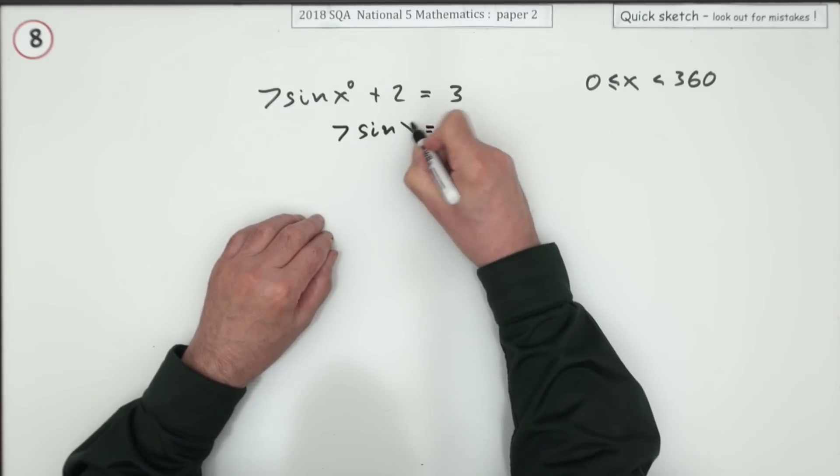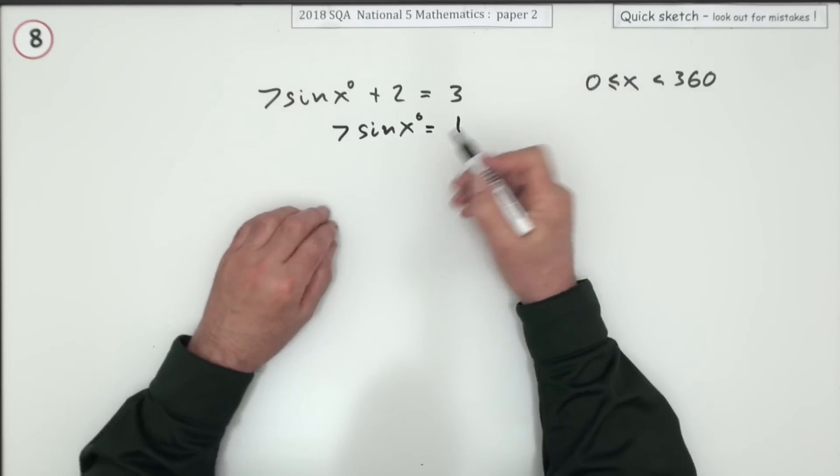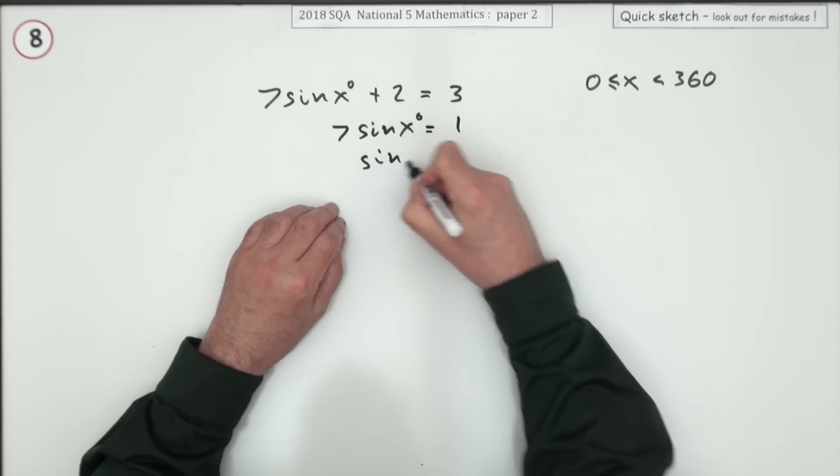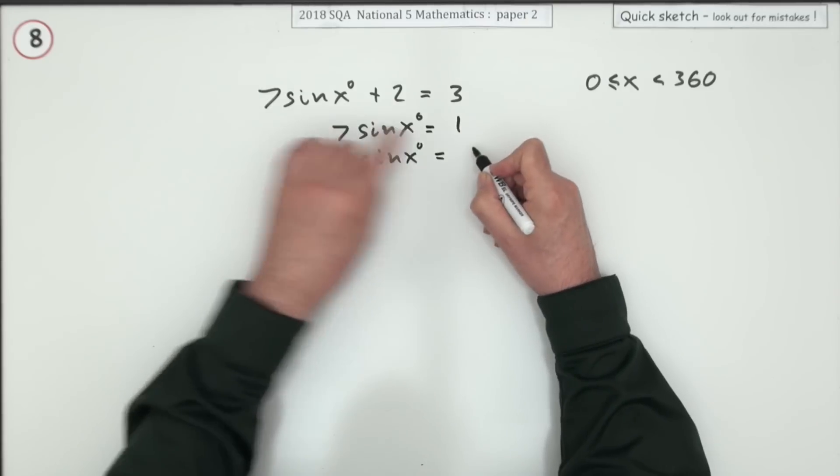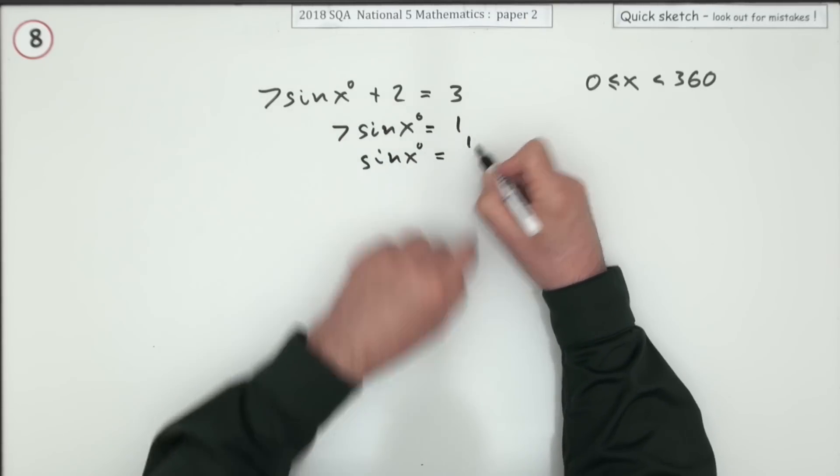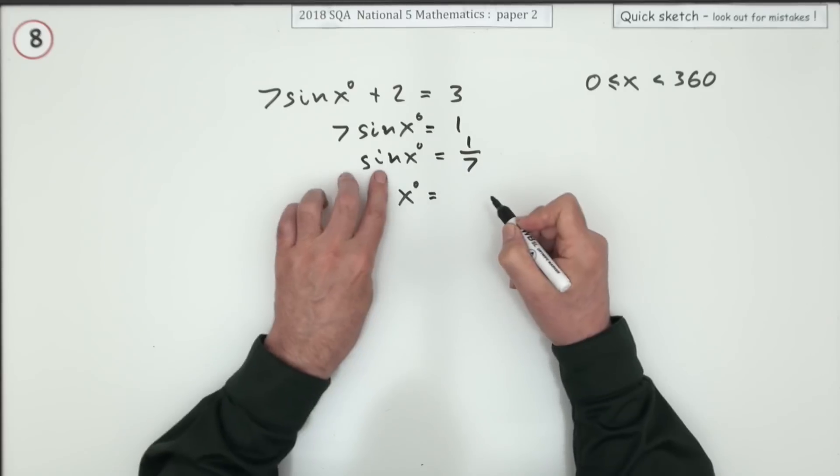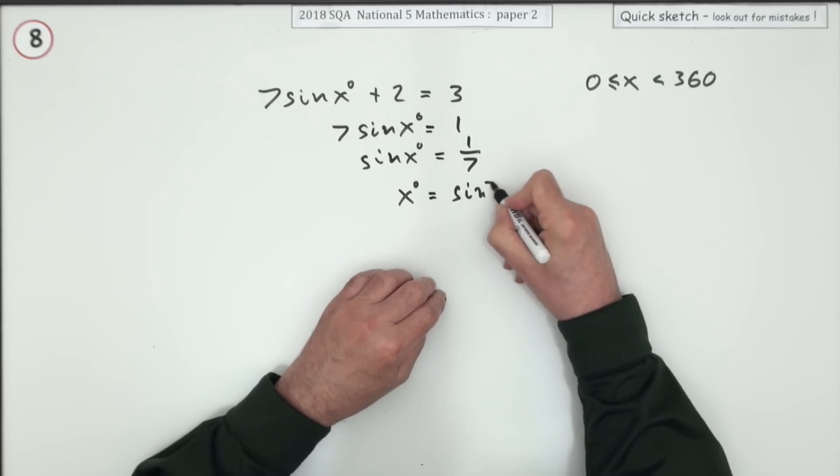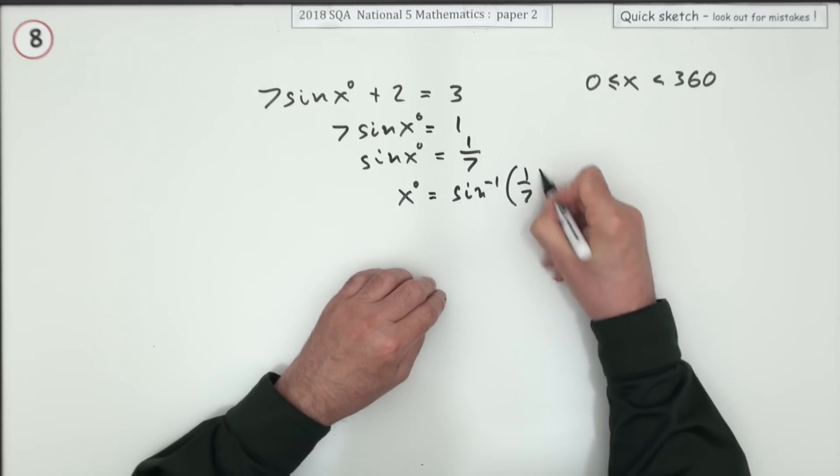So 7 sine x. It's a pest putting the degree sign in. If you don't put it in they're not going to penalize you for that. Most folk leave it out in fact. So take that multiplying 7 across and divide, and finally the inverse of that is inverse sine of a seventh. Now my next line is going to wait for the answer and there should be two parts to the answer.